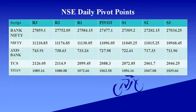Now we go to Nifty. Nifty pivot level is 11,096. Support level ranges: 11,049 and 11,968. Resistance level ranges: 11,130 and 11,210.